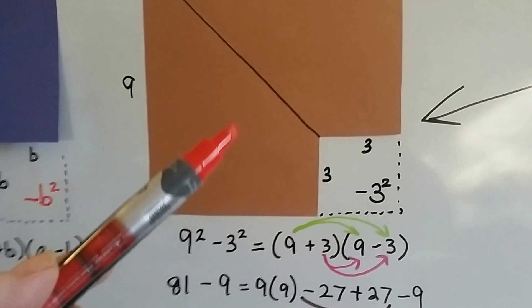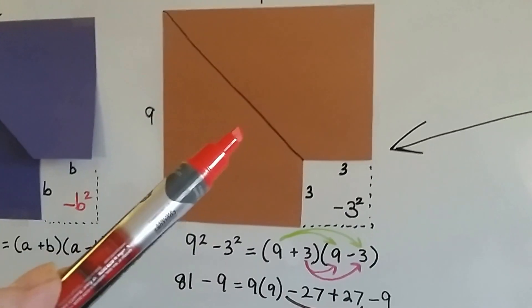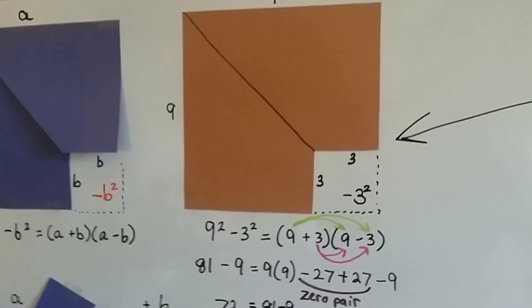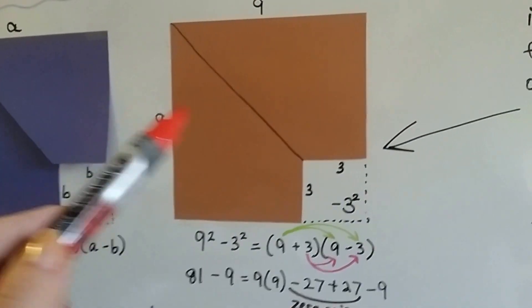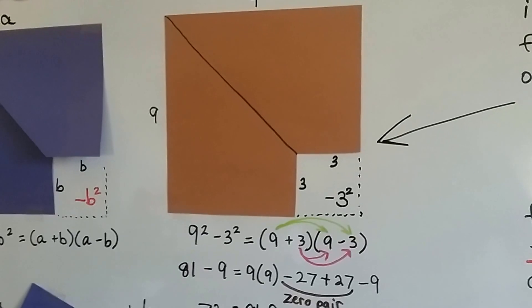So we know that the area of this brown square is 72 units. That's the difference from having a 9 times 9 taking away a 3 times 3.